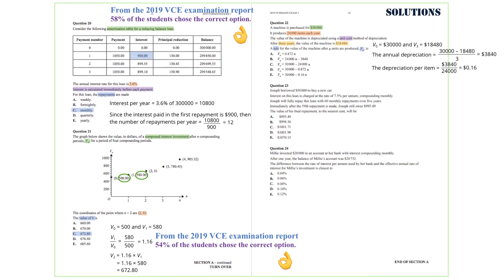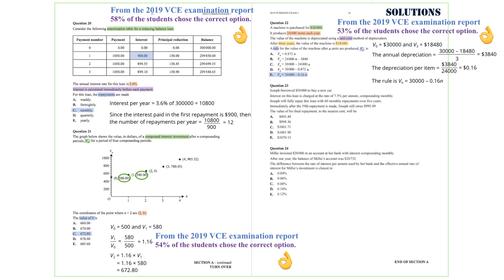So the rule is Vn equals 30,000 minus 0.16n. So the answer we are after is option E. From the 2019 VCE examination report, 53% of the students chose the correct option.